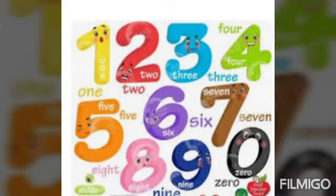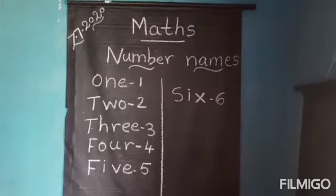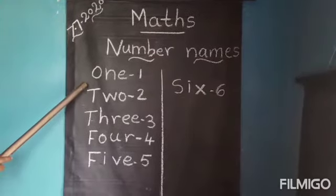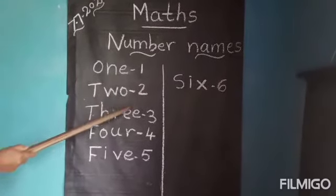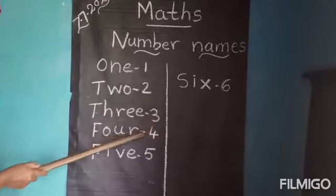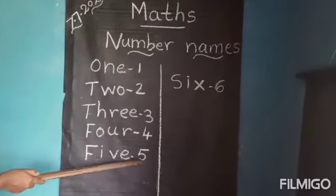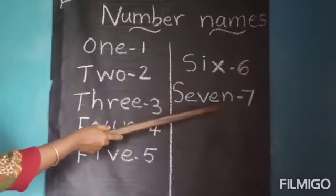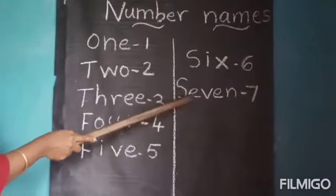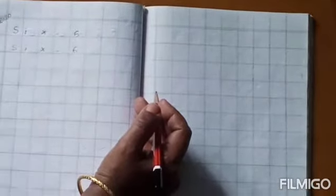Good afternoon children. You have already studied one to six number names. Today we can learn number name of seven. What is the spelling of one? O-N-E-1. Next, two: T-W-O-2. Three: T-H-R-E-E-3. Four: F-O-U-R-4. Five: F-I-V-E-5. Six: S-I-X-6.